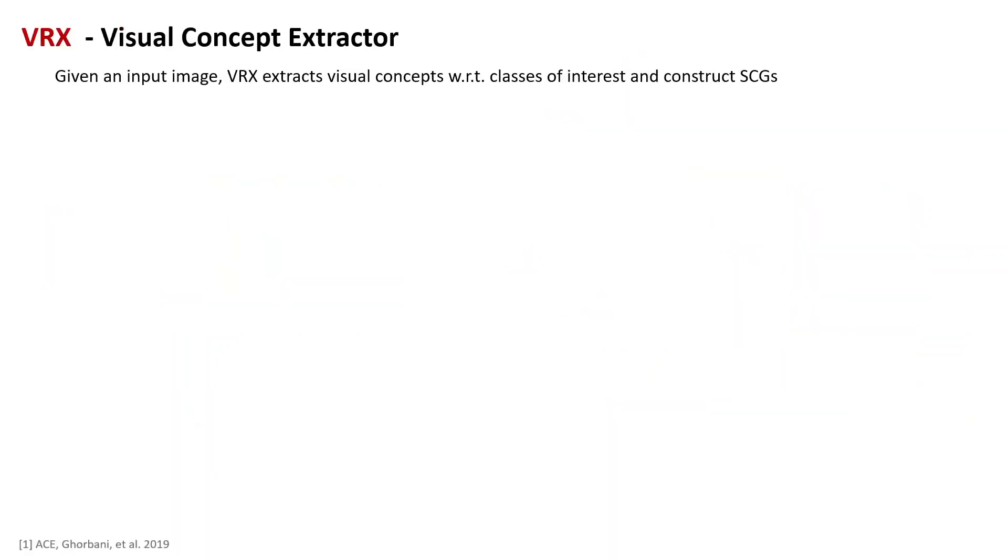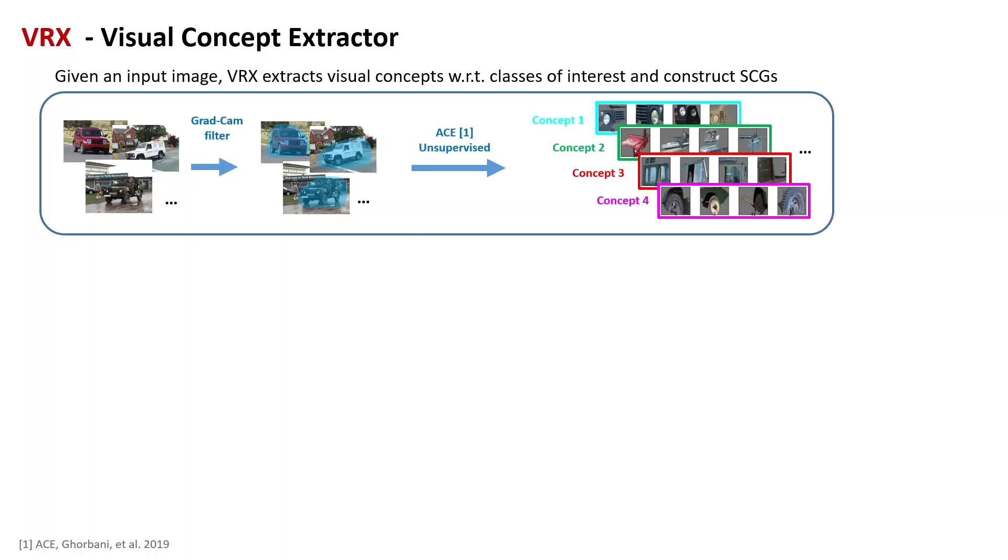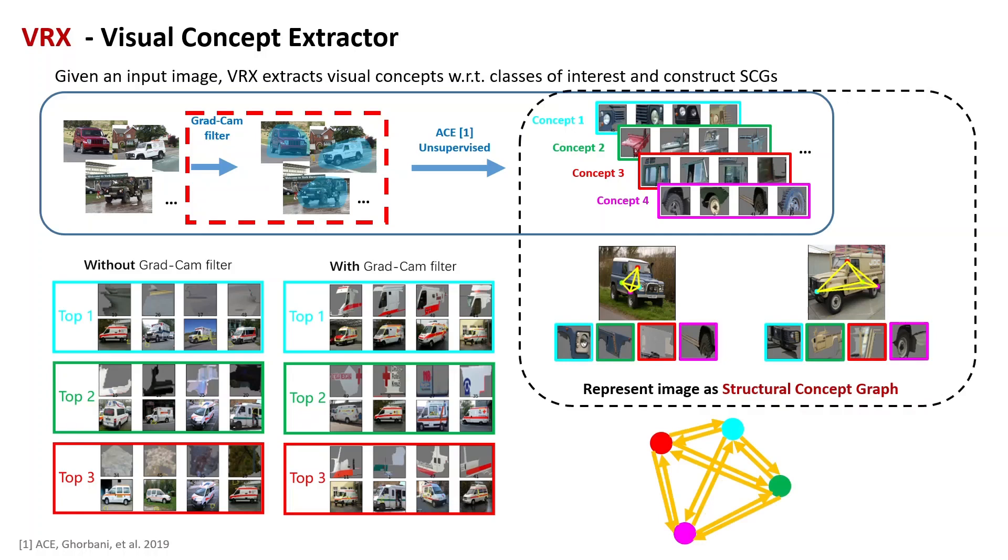The first step of our method is to extract class-specific visual concepts. For instance, to extract JEEP concepts, we use GradCAM attention map as a filter to mask out the unimportant region to decision, and then use an unsupervised method to get the important visual concept for JEEP. Specifically, adding GradCAM filter can help the extracted concept stay in foreground which follows causal inference. With detected visual concept, VRX can represent image as structural concept graph.